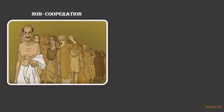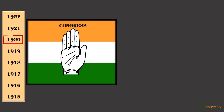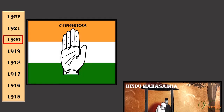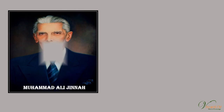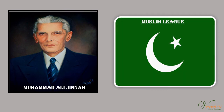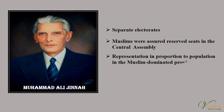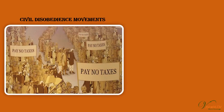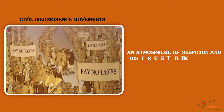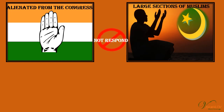After the decline of the non-cooperation Khilafat movement, a large section of Muslims felt alienated from the Congress. From the mid-1920s, the Congress came to be more visibly associated with openly Hindu religious nationalist groups like the Hindu Mahasabha. Muhammad Ali Jinnah, a leader of the Muslim League, was willing to give up the demand for separate electorates if Muslims were assured reserved seats in the Central Assembly and proportional representation in Muslim-dominated provinces — Bengal and Punjab. When civil disobedience started, an atmosphere of suspicion and distrust between communities meant large sections of Muslims could not respond to the call for united struggle.